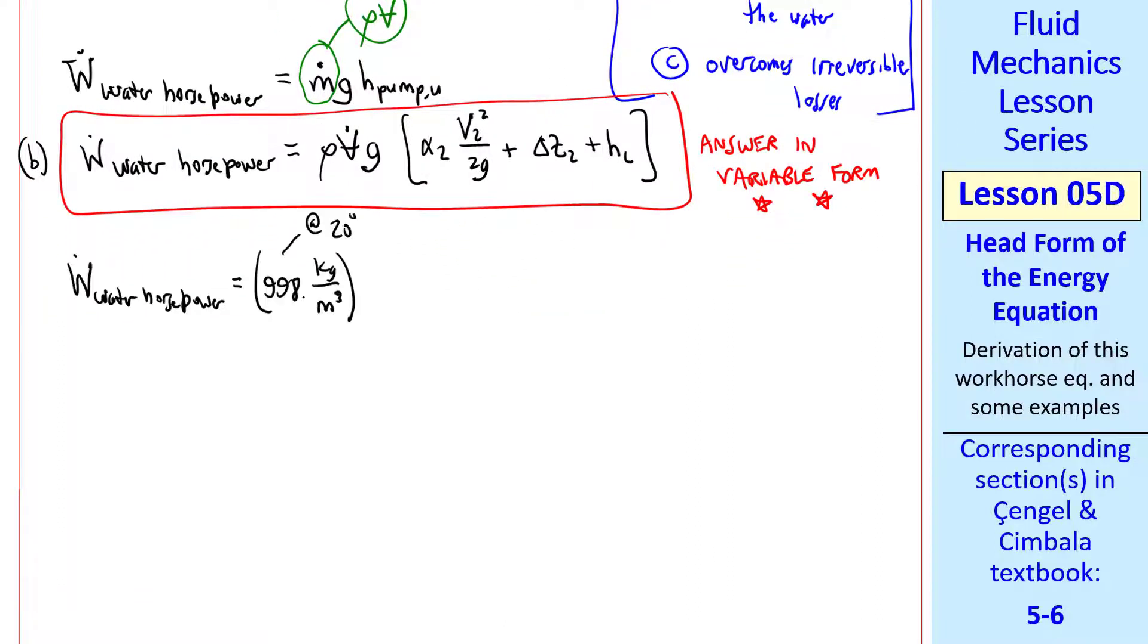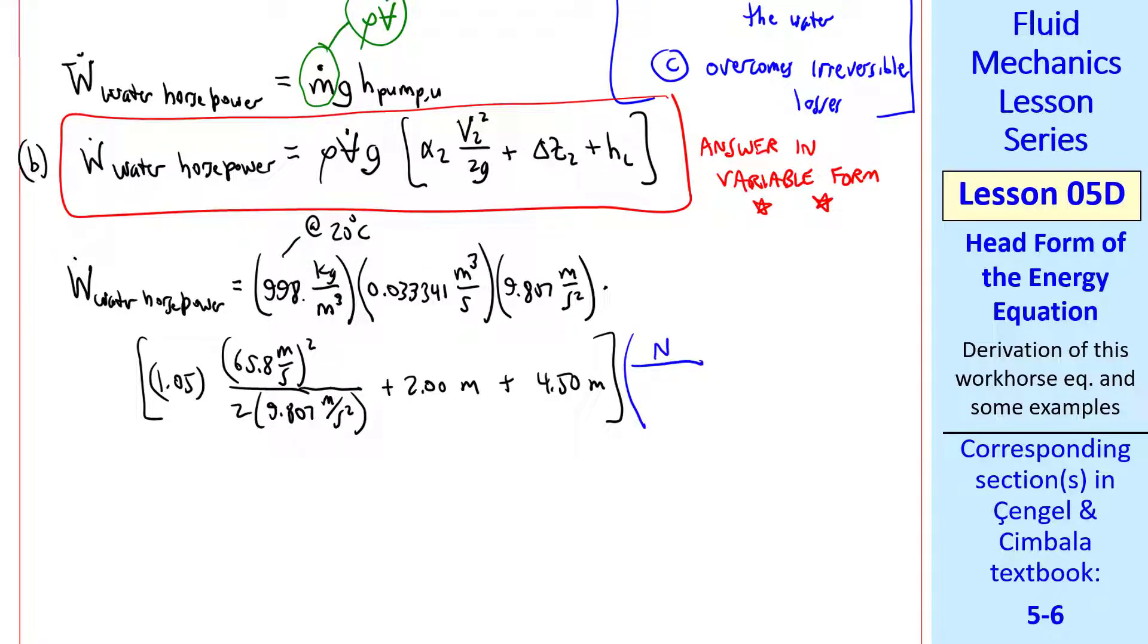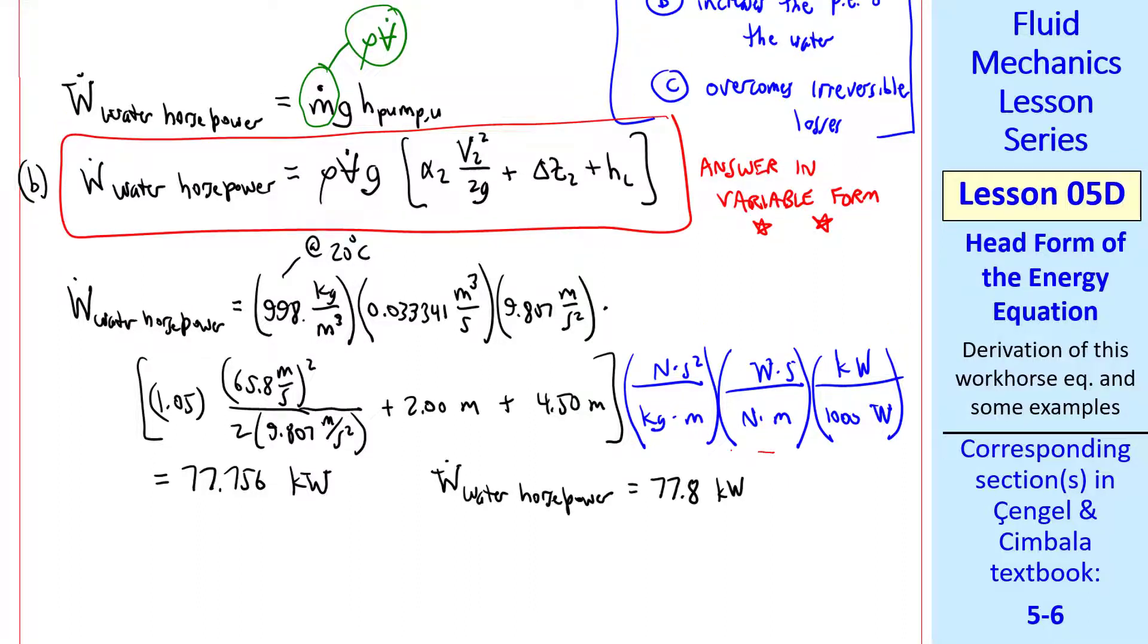Now we plug in the numbers, the density of water at 20 degrees C, the volume flow rate we previously calculated, G times alpha 2, which I will assume is 1.05. This is definitely a turbulent flow. So V2 squared over 2G plus delta Z2 plus HL, which was given in this problem. Now some unity conversion factors. Newton is a kilogram meter per second squared, a watt is a newton meter per second, and a kilowatt is a thousand watts. You can show on your own that all the units cancel out except kilowatts, which is what we want. My calculator gives me 77.756 kilowatts, and my final answer to three digits is 77.8 kilowatt.